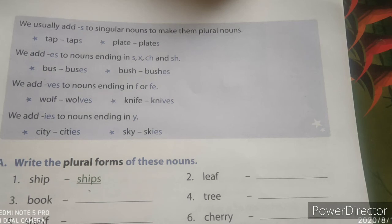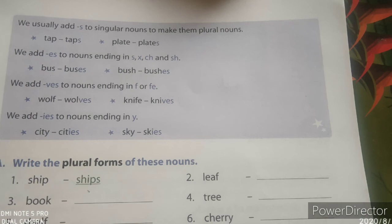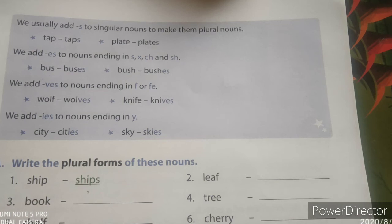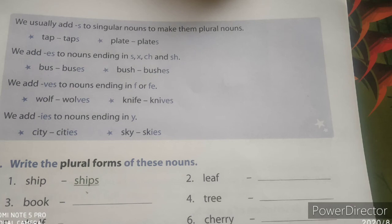And then we add 'ies' to nouns ending in 'y'. कई शब्दों के अंत में 'y' होता है जिसमें हम 'ies' का उपयोग करते हैं. जैसे city — अब city के अंत में 'y' है, तो 'y' को हटाकर हम 'ies' लिख लेंगे — cities, मतलब शहर और कई शहर. और ऐसे ही sky का skies हो जाएगा — आसमान और बहुत सारे आसमान.